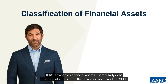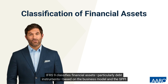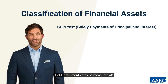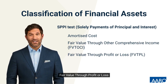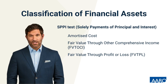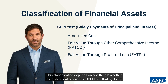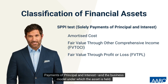IFRS 9 classifies financial assets, particularly debt instruments, based on the business model and the SPPI test. Debt instruments may be measured at amortised cost, fair value through other comprehensive income, or fair value through profit or loss. This classification depends on two things: whether the instrument passes the SPPI test — that is, solely payments of principal and interest — and the business model under which the asset is held.